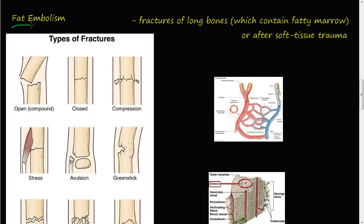So what is a fat embolism? We've talked a lot about embolisms and thrombi and blood clots. A fat embolism is just a chunk of fat that gets inside your blood or your circulatory system and creates a clog. Usually these fat embolisms happen because of fractures of long bones which contain fatty marrow, or after soft tissue trauma.